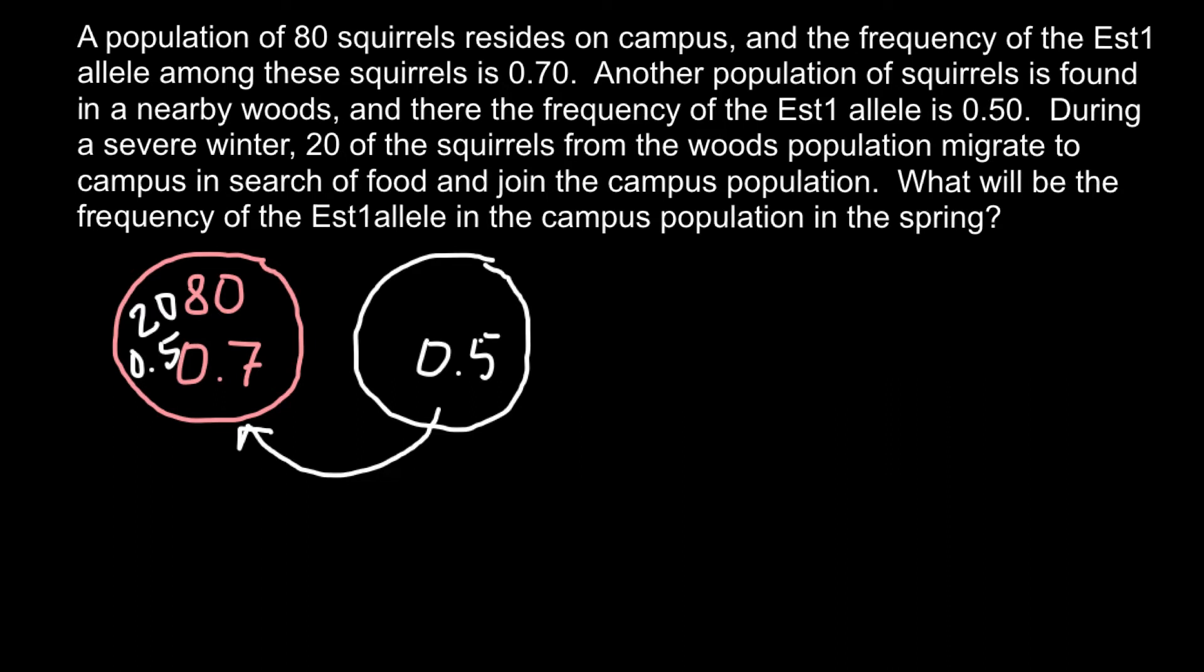So now we have to find what is the frequency of this EST1 allele in this campus population. How are we going to solve this problem? First of all, let's find how many individuals we have here. It is 20. But what is the proportion of these individuals with frequency of 0.5 alleles in this new population?